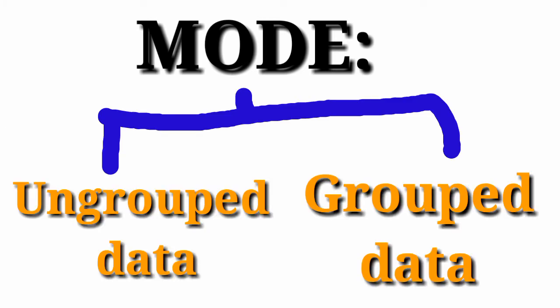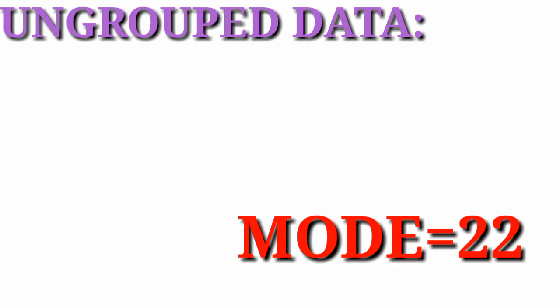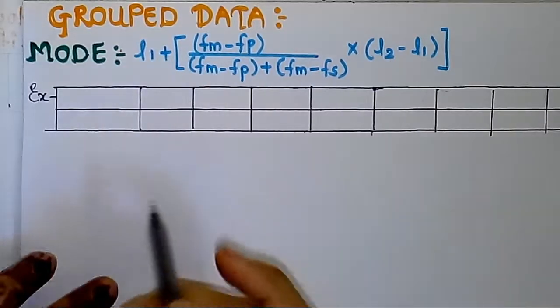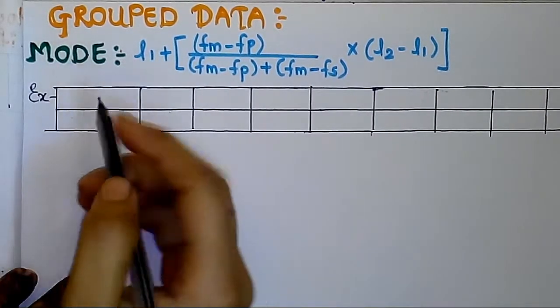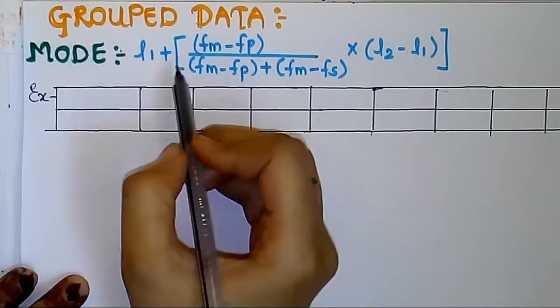First of all we are going to see what is ungrouped data. Here I have given: find the mode from the following. Suppose these numbers are given and here their frequencies are given. So 22 has the highest frequency, so the mode will be 22. This is all about ungrouped data.